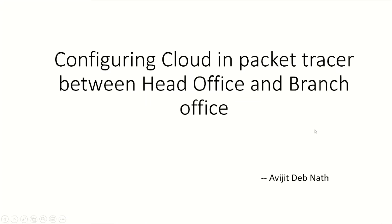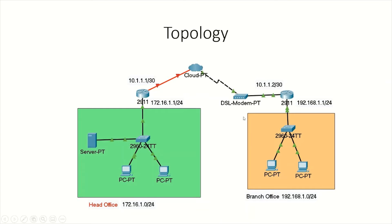Hello everyone. Today I would like to show how to connect two different networks through a public cloud. One is the head office and one is the branch office. I have the topology already ready — this cloud is the head office side and this is the branch office side, and we will connect this router through this cloud to the branch office.